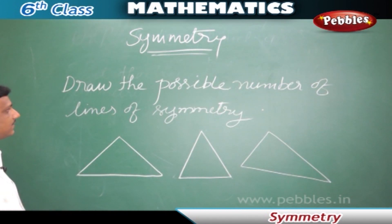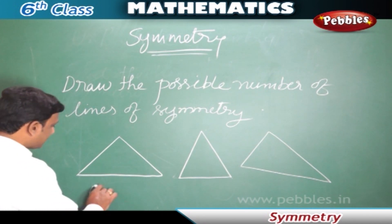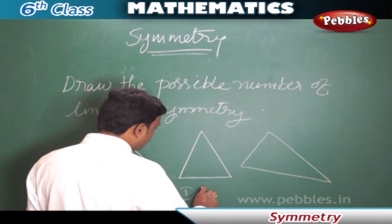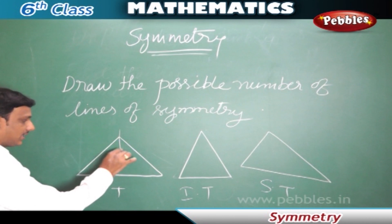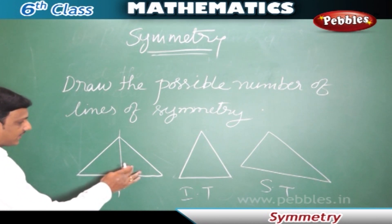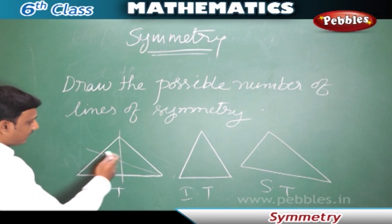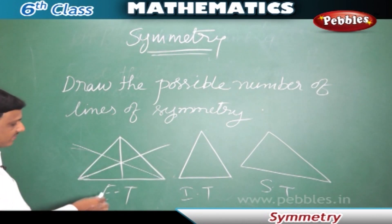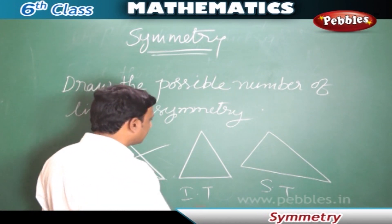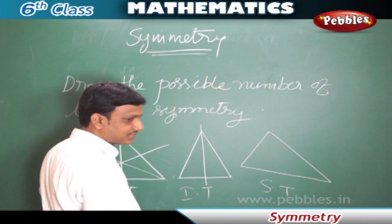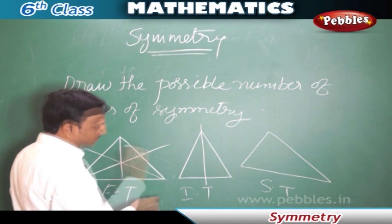Draw the possible number of lines of symmetry for the following figures. Here we have three figures: an equilateral triangle, an isosceles triangle, and a scalene triangle. For the equilateral triangle — by folding at this vertical axis both halves match exactly, and similarly folding in other ways also works. So the equilateral triangle has got three lines of symmetry. The isosceles triangle has got only one line of symmetry — only this vertical fold can make the figure into two identical parts.